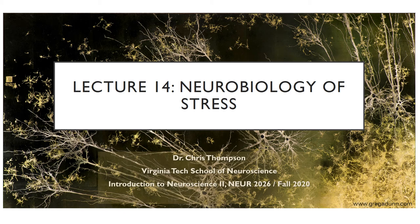We're going to be transitioning to the section of this course where we'll be discussing how the brain has a chemical influence over the body — driven in part by the nervous system, but also through mechanisms of regulating hormones and hormone distribution. We're going to talk about the hypothalamus, which is the major hormonal regulation center for the body, and we'll also be discussing the underlying mechanisms of stress.